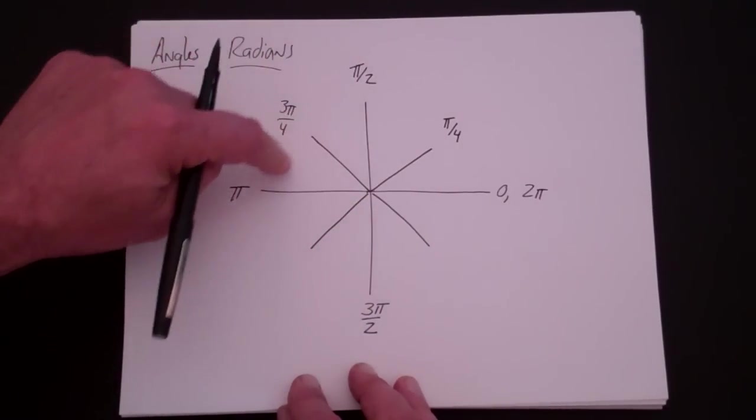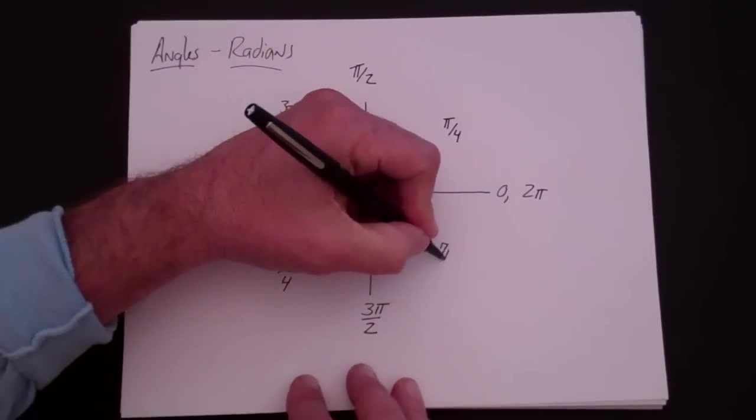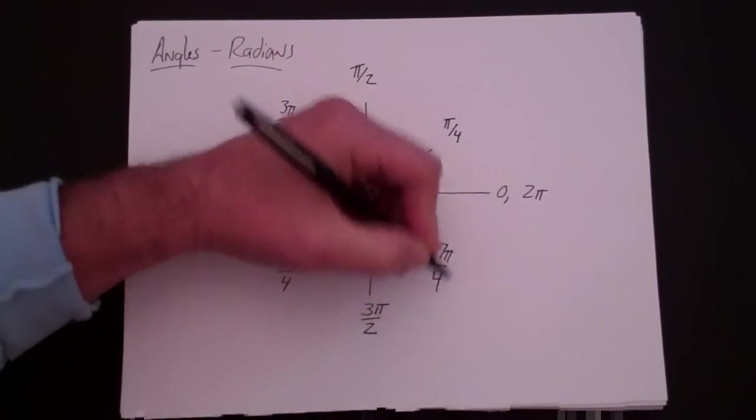This is 5 pi over 4. And this is 7 pi over 4. And what I'm going to want you to do is memorize those.